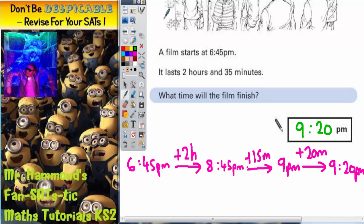Just to prove why we can't just do a column method for this, if we started with 6:45 and then added on 2:35, watch what happens. 5 and 5 makes 10, 4 and 3 is 7 plus 1 is 8, 6 and 2 is 8.